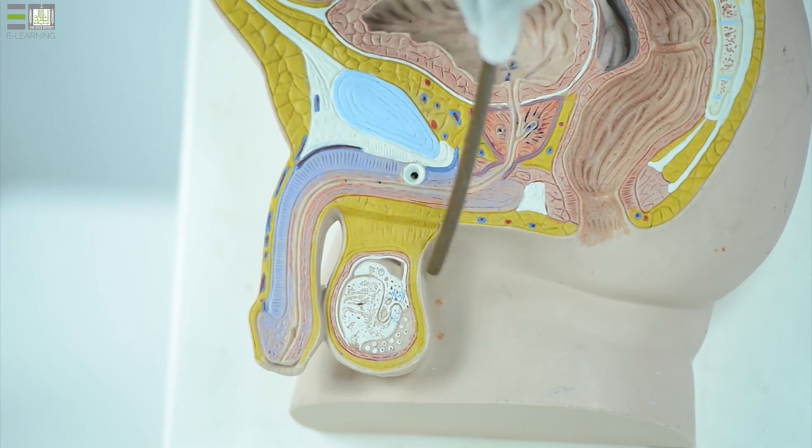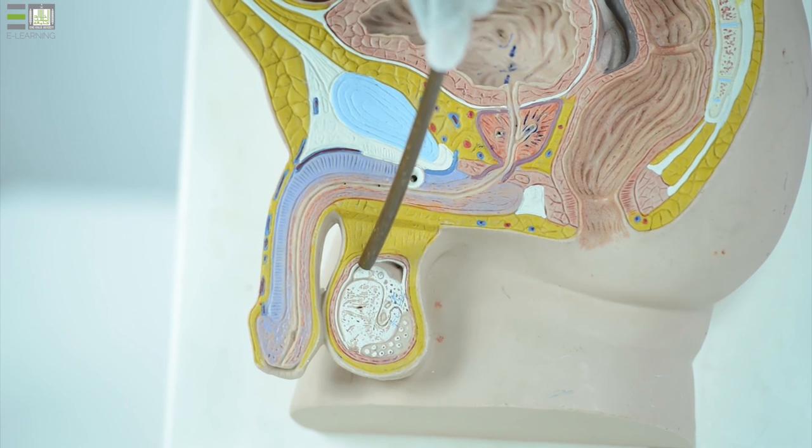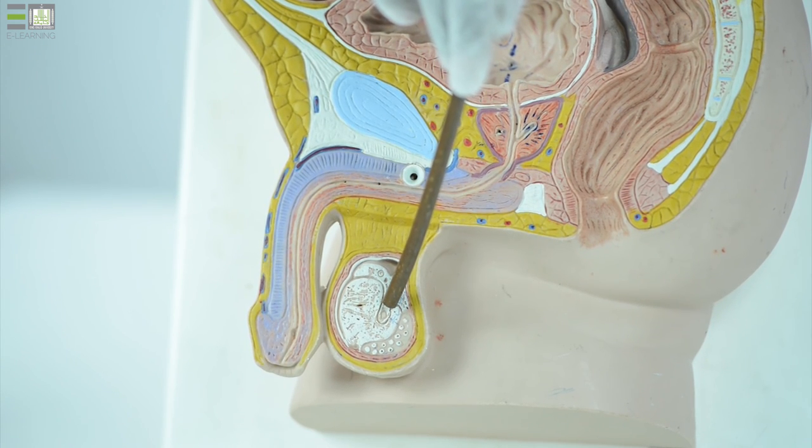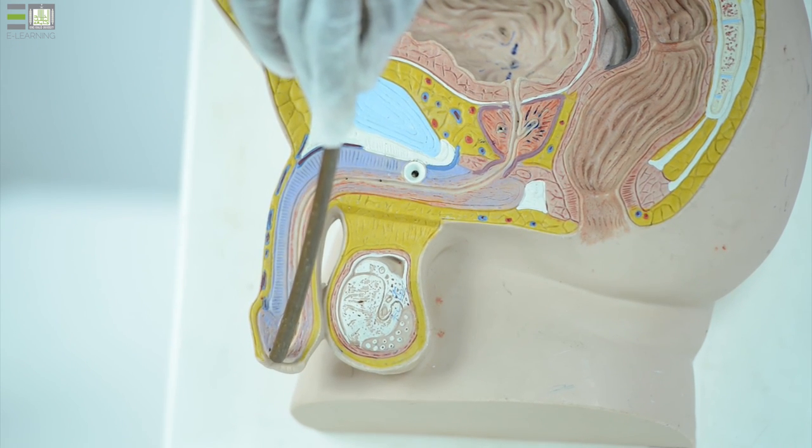Also appearing here the scrotum and the testis, the epididymis at its posterior aspect. This is the external urethral orifice.